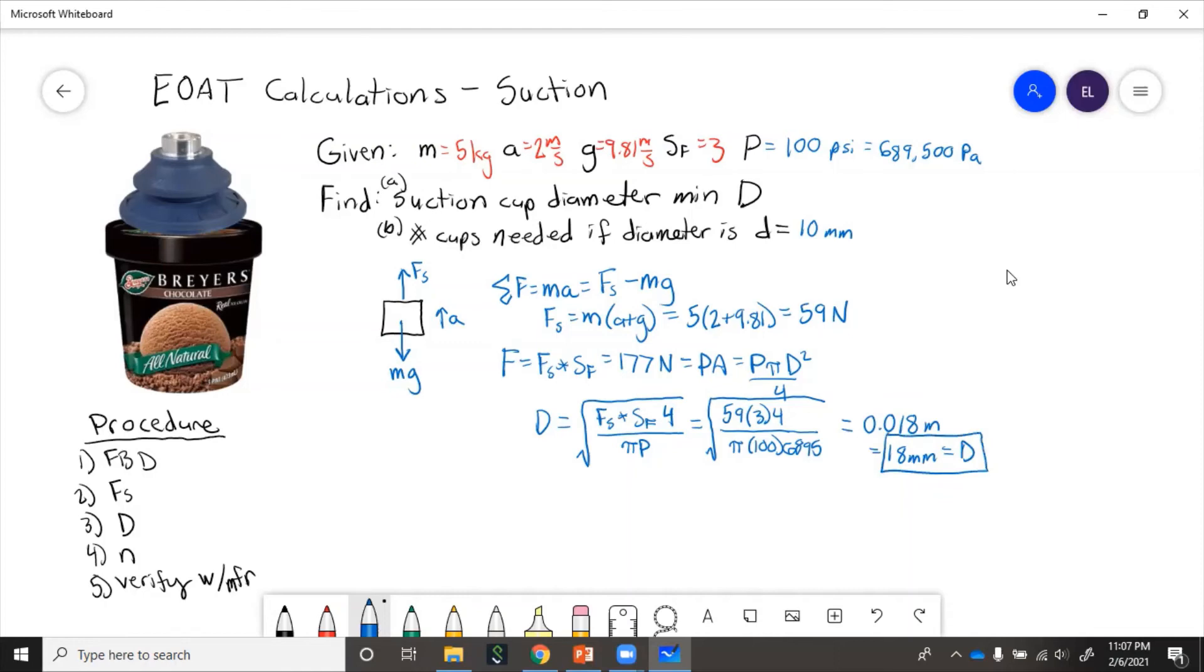But what if we don't have that size suction cup? What if we only have 10-millimeter suction cups? Or the 10-millimeter suction cups are whatever is right for picking up ice cream. They only come in certain standard sizes. Or we don't want to use just one cup, we want to use an array. What is the minimum number of cups that we need? Well, we need to cover the same area with the smaller cups as we do with the bigger cup. So really what we need to do is compare areas.